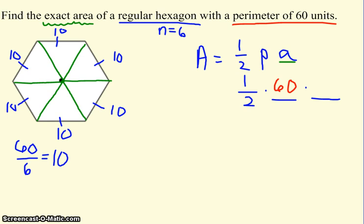Another thing to get us closer to finding the apothem will be to find the central angle. Remember, the central angle is right here. Since there's a hexagon with six sides, there will be six central angles. So we're going to do 360 divided by 6, which gives me 60 degrees. So all of these central angles will be 60.